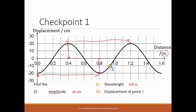The next one: the displacement of point S. The displacement of point S is not measured from one point to another on the wave. You find that the displacement is always compared to the zero line, and in this case the position is displaced at negative 10 centimeters.